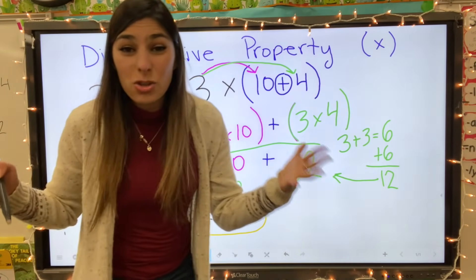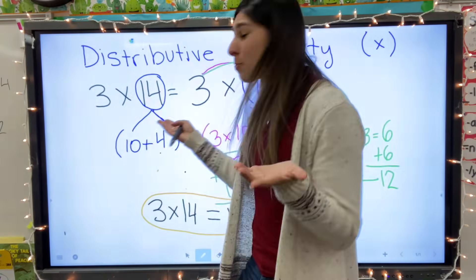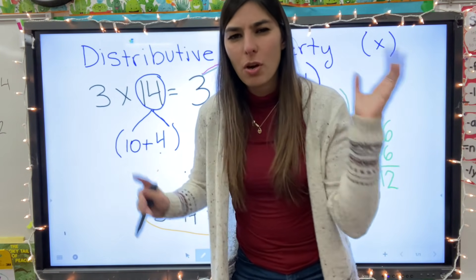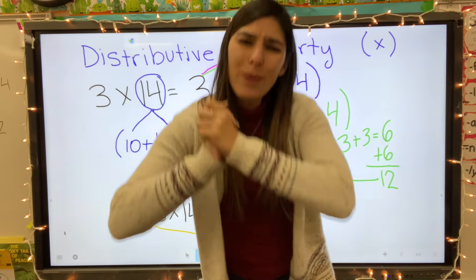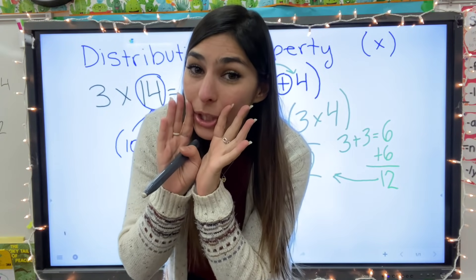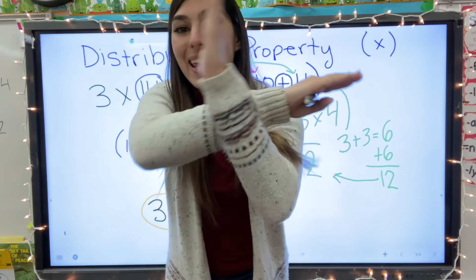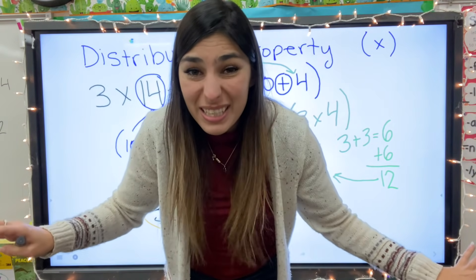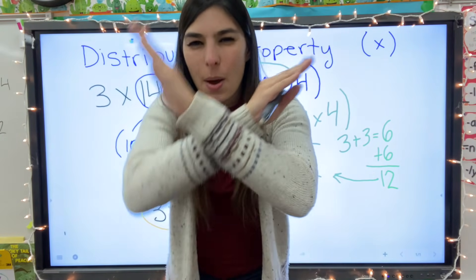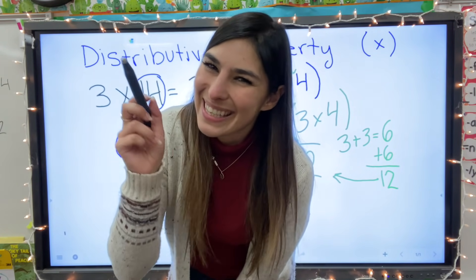That is distributive property! It almost blew my mind thinking I need to multiply by fourteen, but we just broke it up into smaller numbers and it's way easier for our brains to solve. Remember: break the big number, share the love between both, and add them together. A little clue to spot it — distributive property has multiplication and addition, while all other properties have only one or the other. That's all for today; next up will be associative property — keep on blooming!